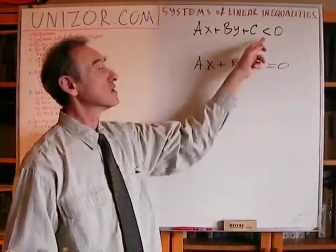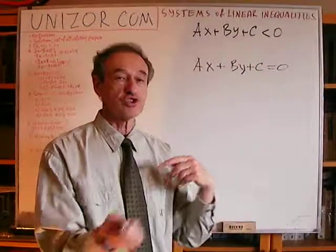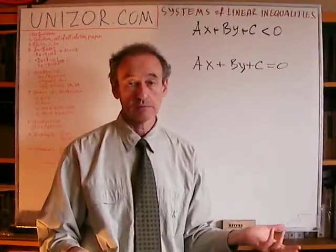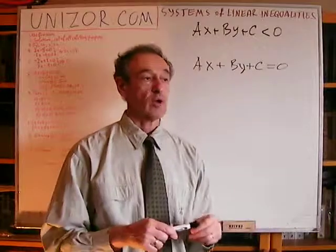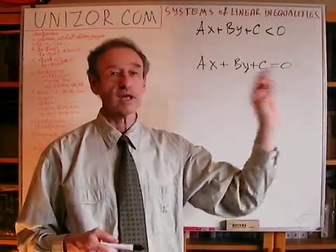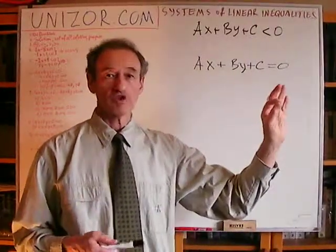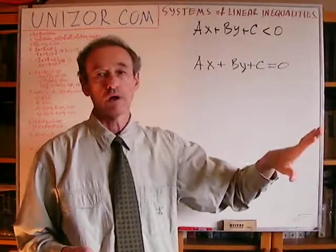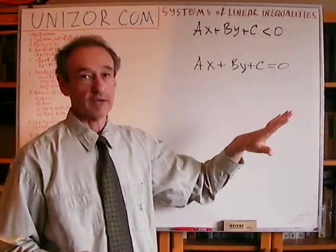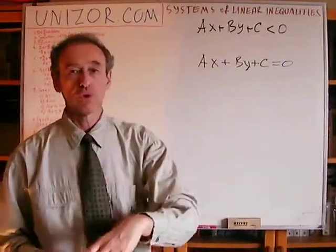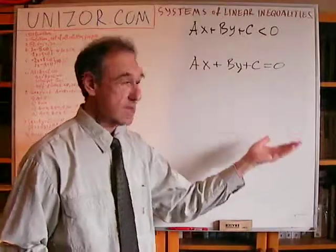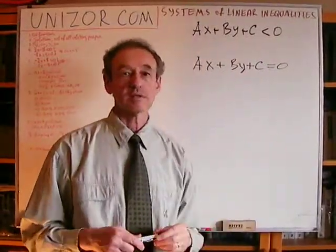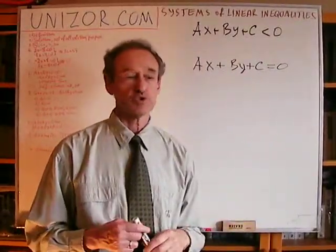If we are interested in the negative half, we just choose that half-plane. To determine which half, take any point and check the value. If the value is positive, we're in the wrong half — go to the other side. If negative, that half-plane is the one we need. So an inequality like ax plus by plus c less than zero has a solution represented as one half of the coordinate plane, with the boundary being the graph of the linear function.